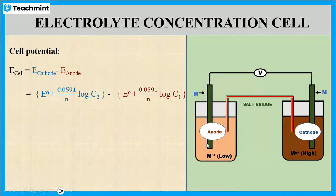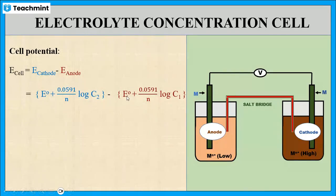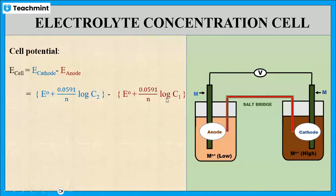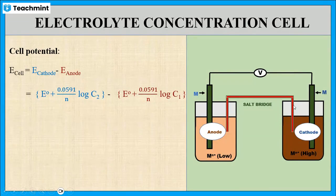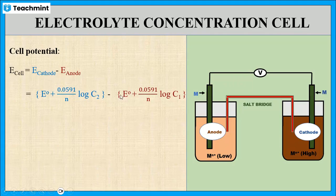At the anode, we use the lower concentration C1, so E anode = E° + (0.0591 / N) × log C1 at 298 K, where N is the number of electrons. Since both metals are the same, the E° values are also the same, so the +E° and −E° terms cancel out.